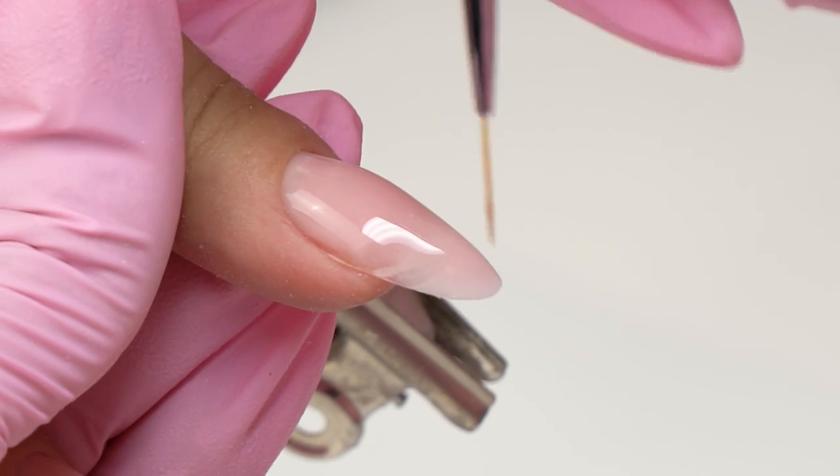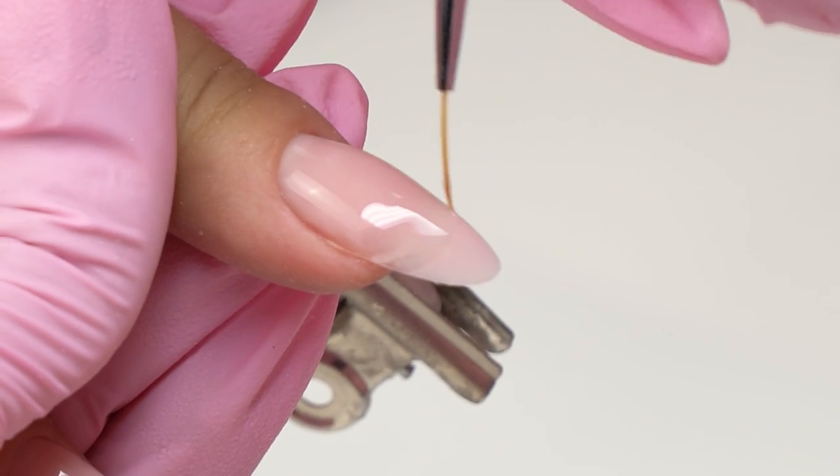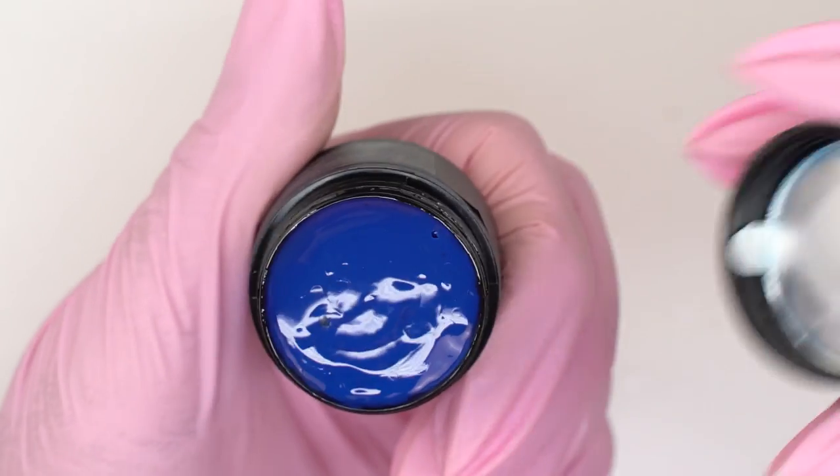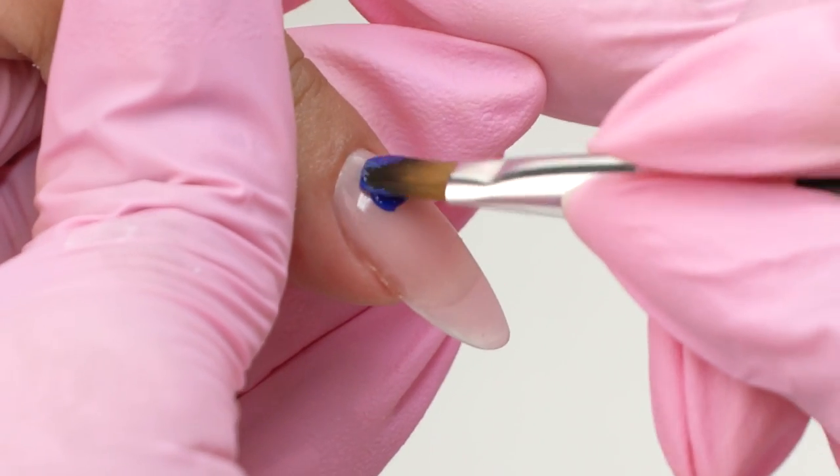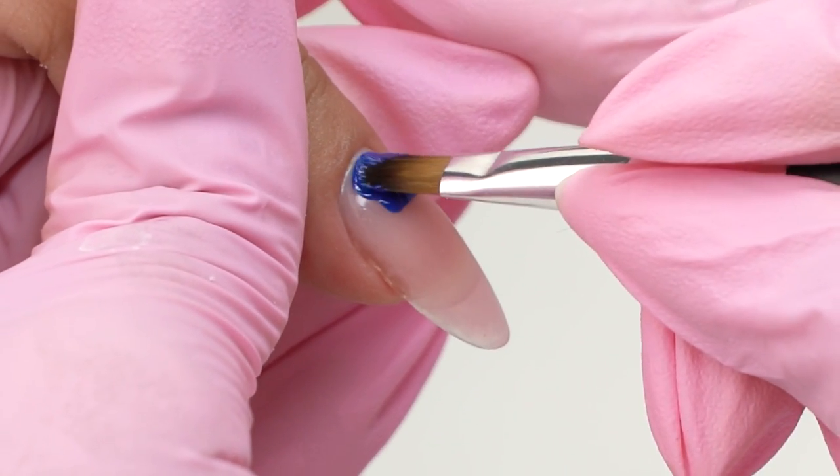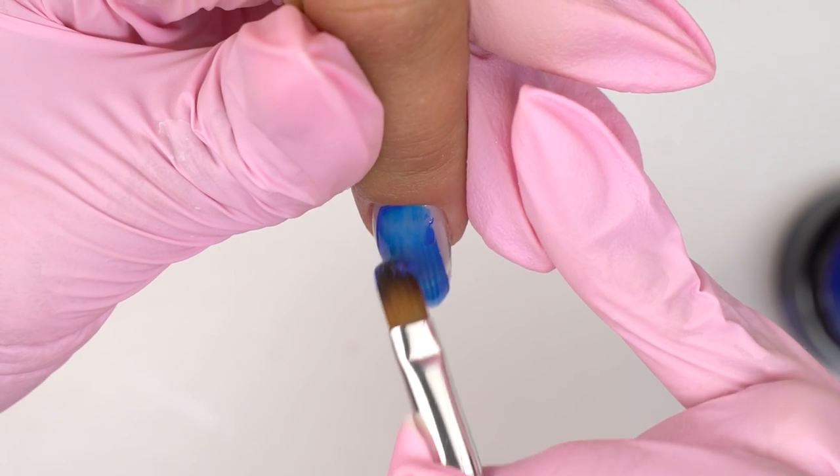Moving on to the color. I will be using this cream lac gouache. It's perfect for painting swirls, lines and doing a full coverage. It is super opaque.